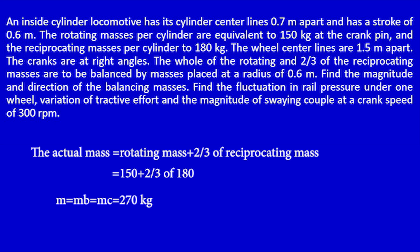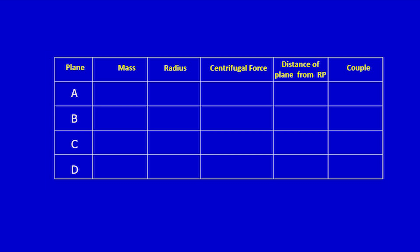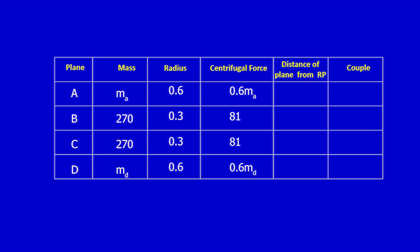The actual mass M equals 270 kg. The remaining masses MA and MD are unknown. The cylinder has a stroke of 0.6 m, which means radius RB and RC equal 0.3 m. The wheel radii RA and RD equal 0.6 m. I will mark these values in the table. The centrifugal force is the multiplication of mass and radius: multiply column 2 and 3. MA multiplied by 0.6 equals 0.6·MA; 270 multiplied by 0.3 equals 81; 270 multiplied by 0.3 equals 81; MD multiplied by 0.6 equals 0.6·MD.